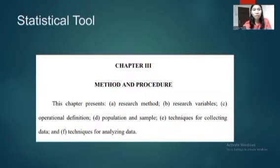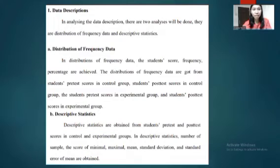Since we are here in Chapter 3, Research Procedure, this chapter presents research method, research variables, operational definition, population and sample, techniques for collecting data, and techniques for analyzing data. Since we are focused on statistical tools, we will jump to techniques for analyzing data.